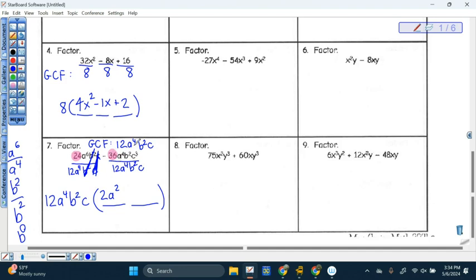So that part just cancels out to be one. The c's also cancel out. So when I divide this first term by my greatest common factor, all I'm left with is 2a squared. Now let's do it for this one too. So negative 36 divided by 12, negative 3. a to the fourth divided by a to the fourth cancels out. b squared divided by b squared cancels out to be one. c cubed divided by c, c squared. And that's it.